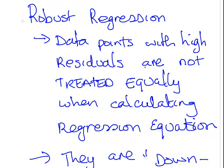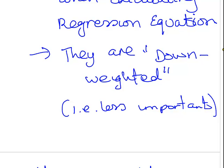So robust regression now. Data points with high residuals are not treated equally when calculating the regression equation. This is the idea of robust regression. As opposed to ordinary least squares, they are not treated equally. For example, they might be down-weighted, less important. But how do we come up with a system for assigning the new weightings?